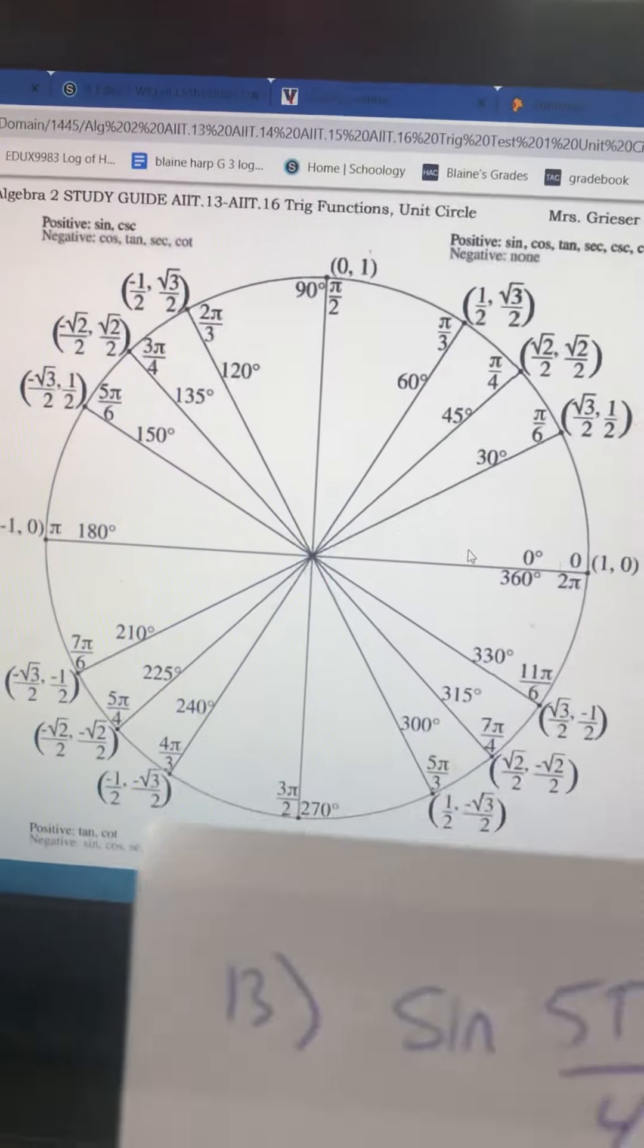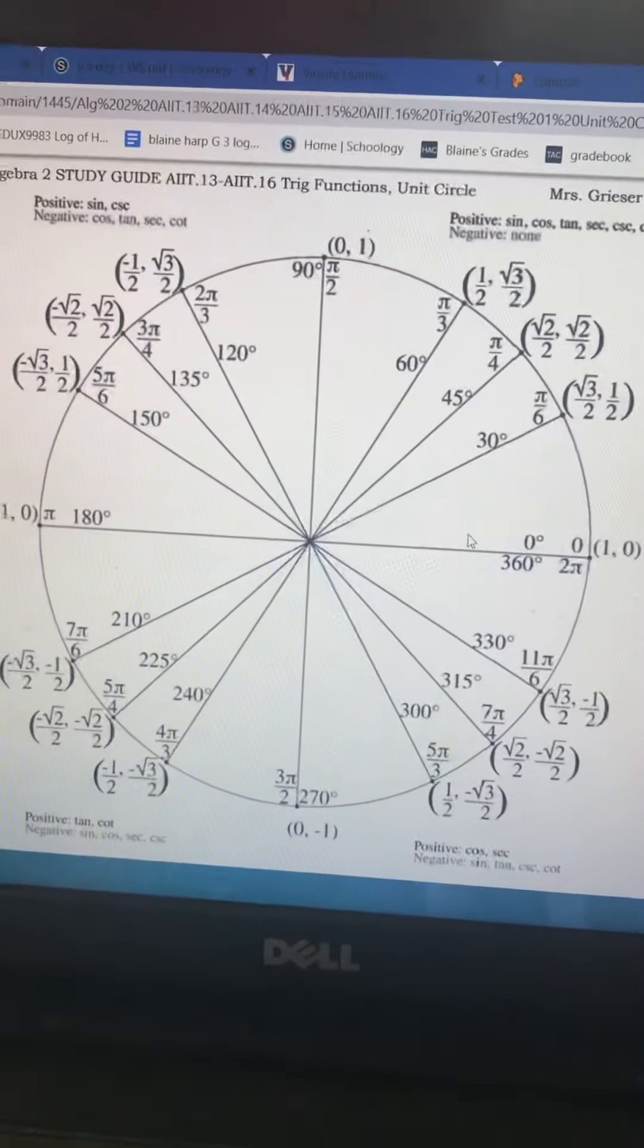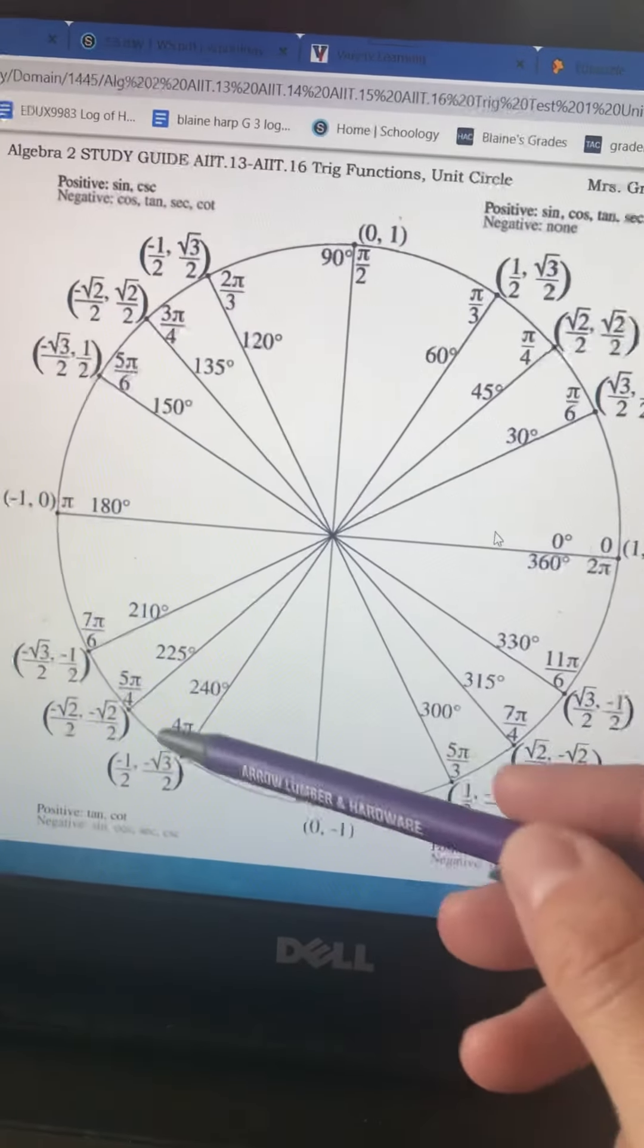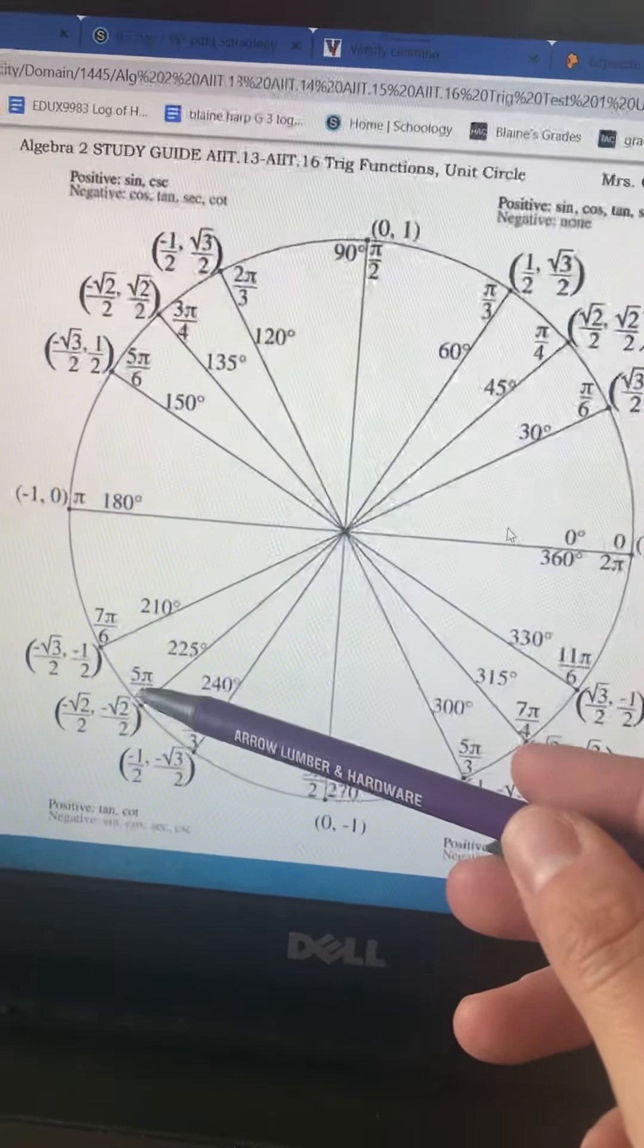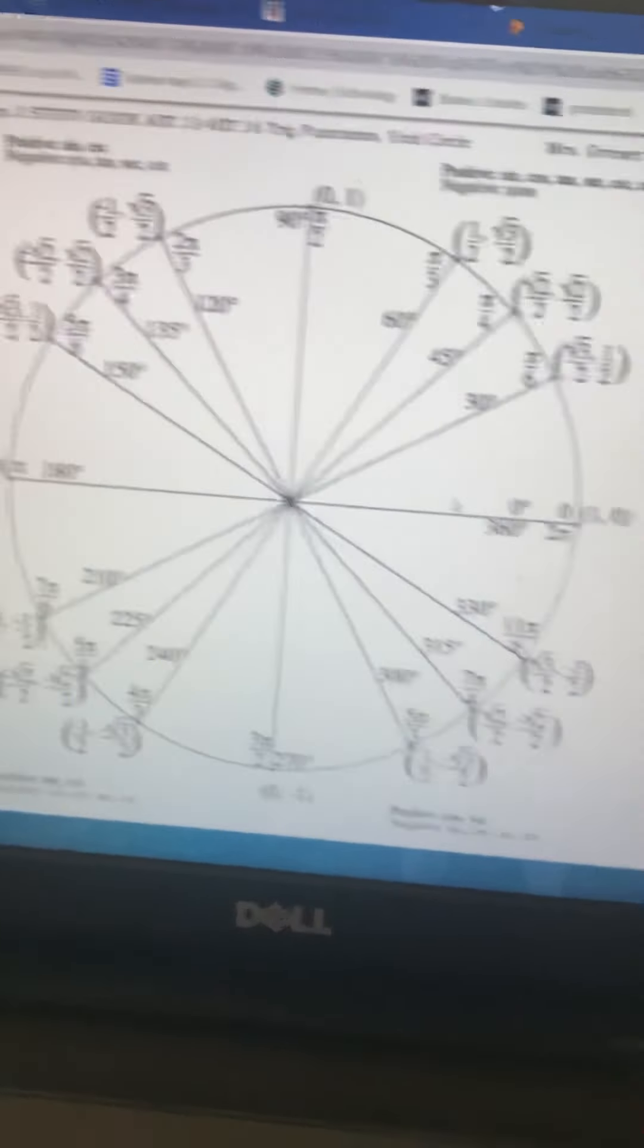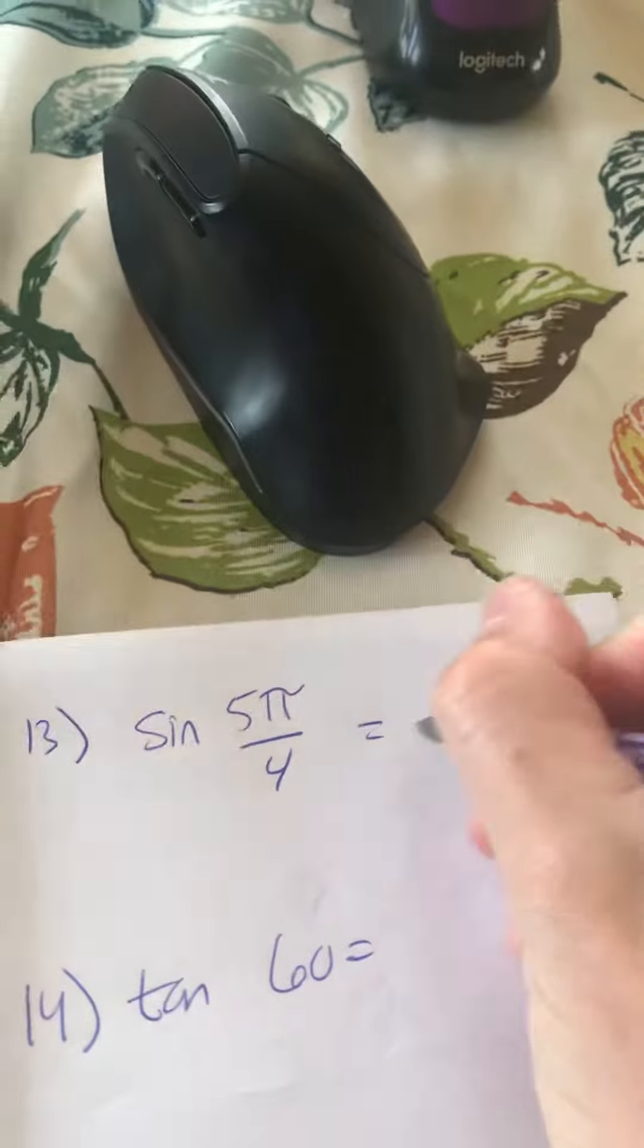Number 13 asks for sine of 5π over 4. Look for 5π over 4 on the unit circle. Found it. Since they want the sine value, they just want the y value. So this part of the coordinate, negative radical 2 over 2. That's your solution for number 13.